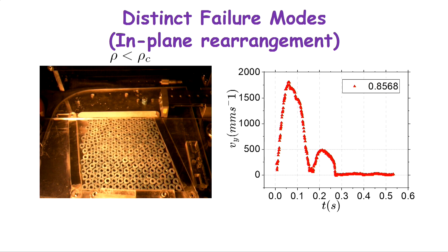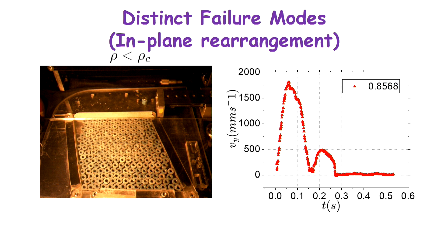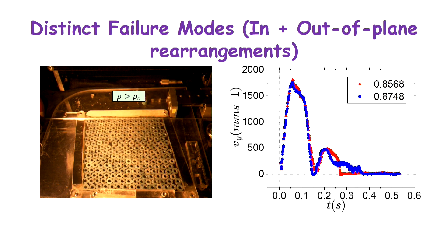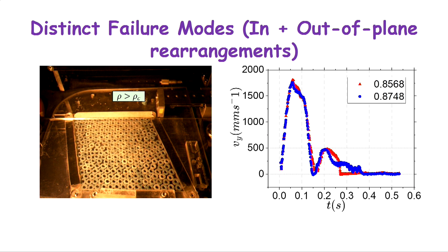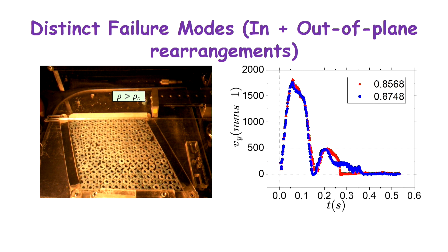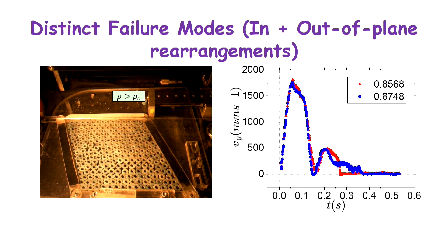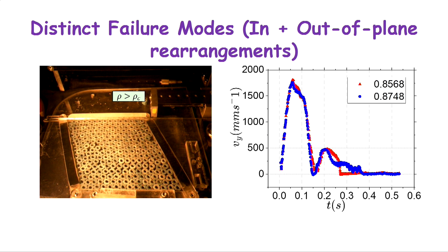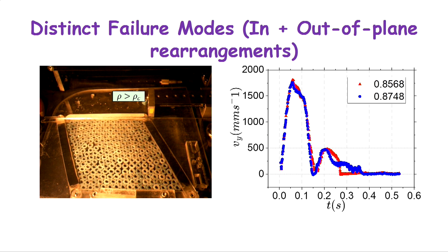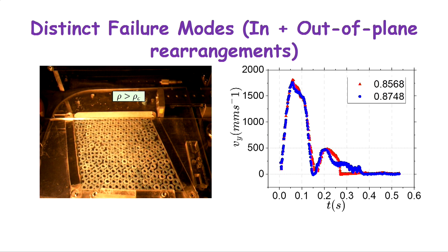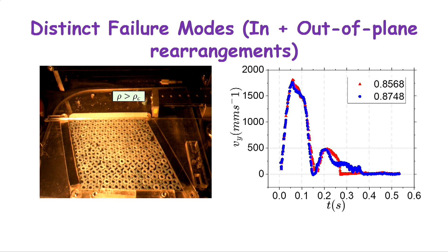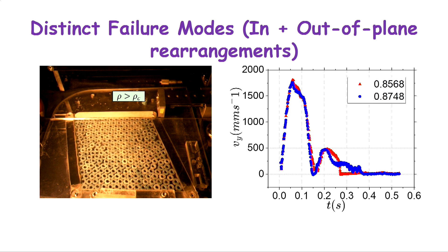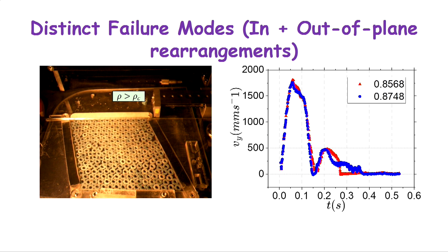Above the critical density, the system almost comes to a halt, breaks, then goes up again. When density exceeds critical density, the speed evolution is very different - much more drawn out. Even looking at plunger speed reveals a clear difference between below and above critical density.